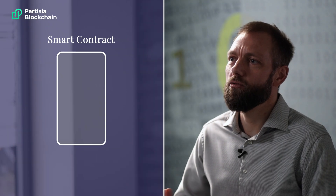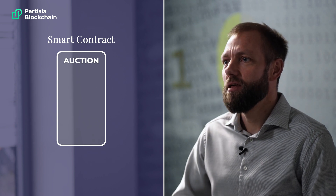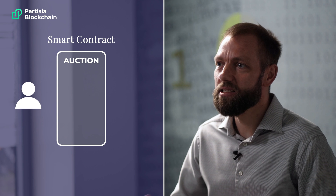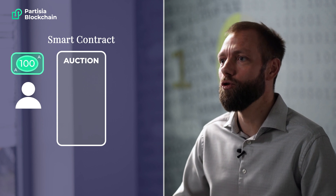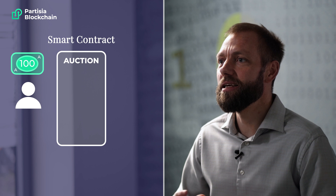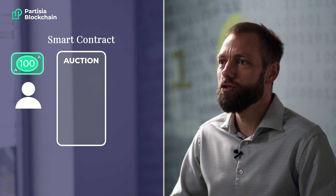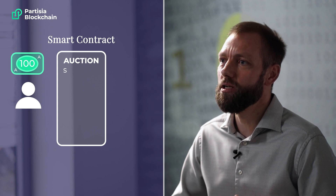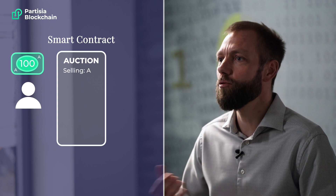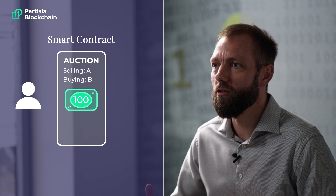An example of a smart contract that can be used on the Partisia blockchain is an auction. In this example, we have Alice who wants to sell 100 tokens of type A, and she's interested in getting the best possible price for these. So she puts an auction up on the blockchain, specifying that she wants to sell tokens of type A and in return she's interested in tokens of type B. So she creates the smart contract and puts it on the blockchain.